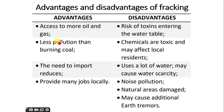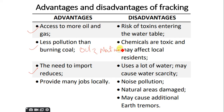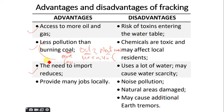Fracking has advantages and disadvantages. The advantages are that you can access more oil and gas, and there is less pollution than burning coal — which produces more CO2 and more pollutants than oil and natural gas. So using oil and natural gas accessed through fracking as an alternative to coal results in less pollution.